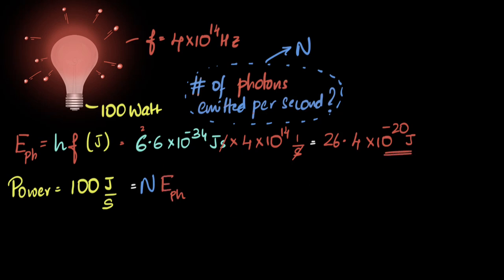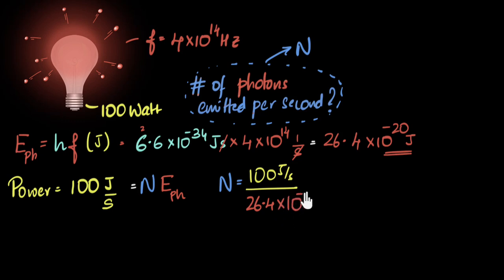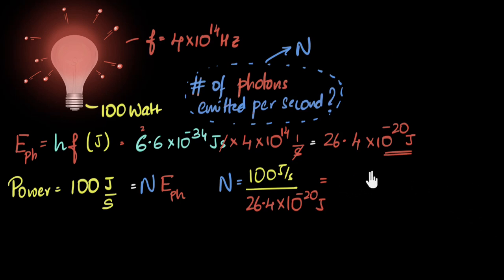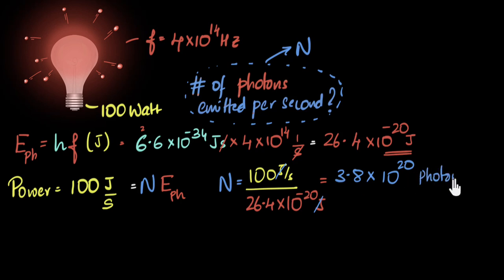So now I know this number and I can calculate n. N is going to be 100 joules per second — the power — divided by the energy of each photon, which is 26.4 times 10 to the power minus 20 joules. Using a calculator, 100 divided by 26.4 gives 3.8. So n equals 3.8 times 10 to the power 20. Joules cancels and I get per second — so 3.8 times 10 to the power 20 photons per second.